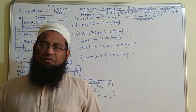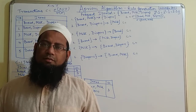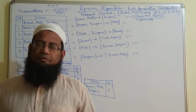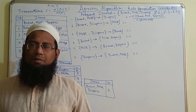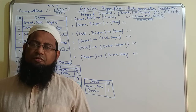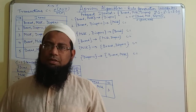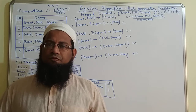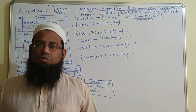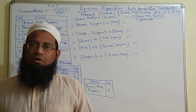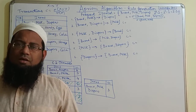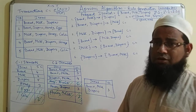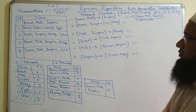In the previous lesson, we have seen how we can use the Apriori algorithm to find the frequent item set. After we have found the frequent item set, the second step for association rule mining will be to generate the rules, or strong rules. I would like to give a recap of what we have done in the previous video.